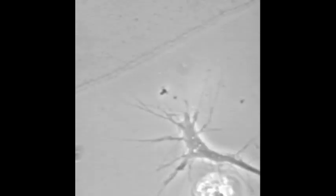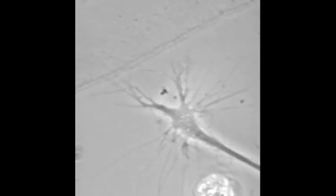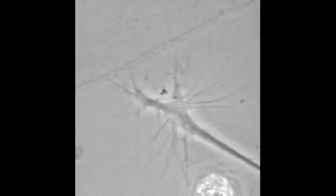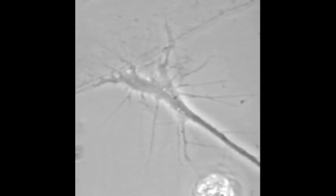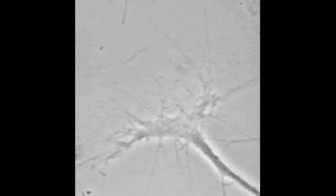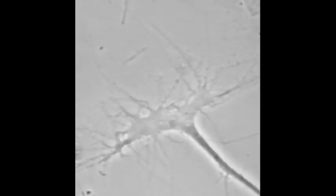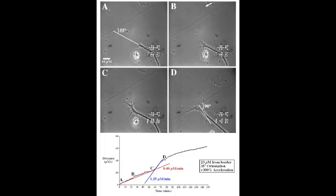The growth cone accelerates towards laminin while still on the fibronectin surface. Microtubules and organelles rapidly advance in the growth cone as it speeds towards the laminin border. This figure illustrates the increased velocity of the growth cone after turning towards the laminin border.